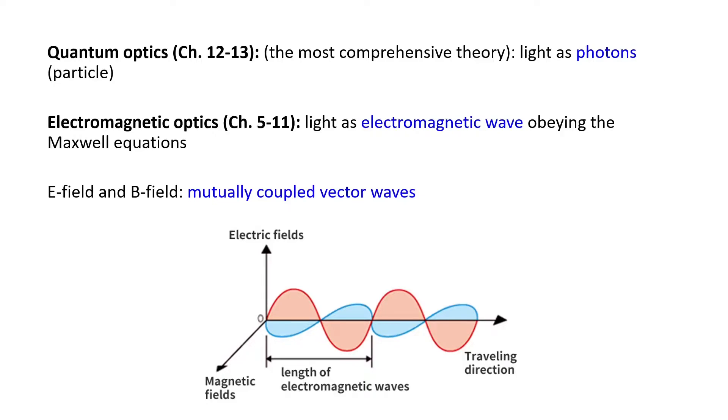Here you see the electric field is along, for example, x direction. The magnetic field is perpendicular to that along y direction. And the direction of propagation is along z.